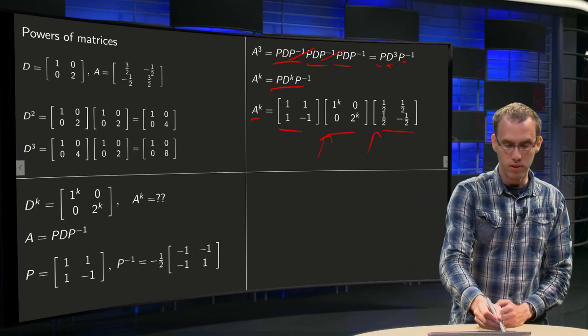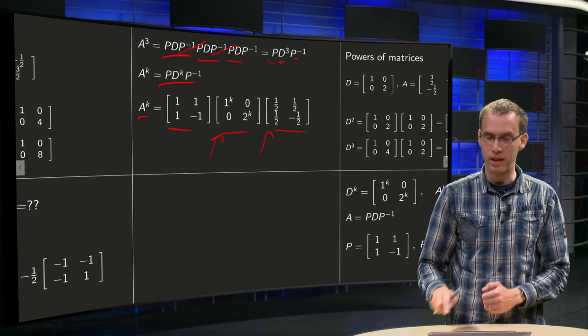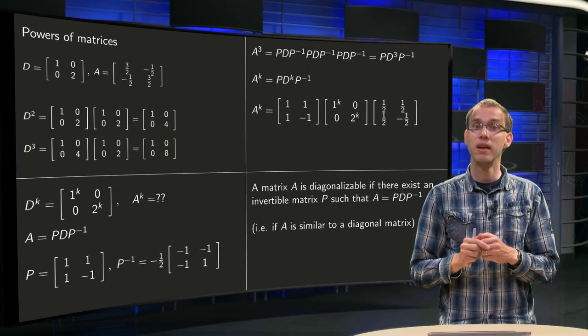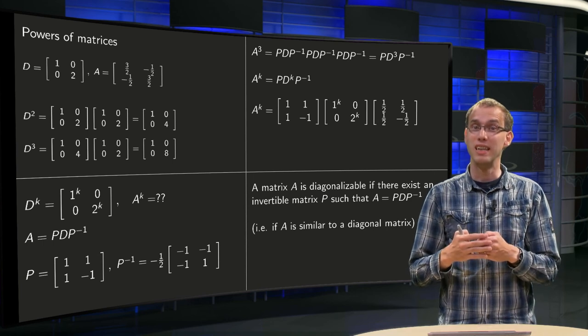So, what is this property over here, that you can write A as P times D times P inverse? Well, that has got its own name. A matrix which can be written like that is called diagonalizable.